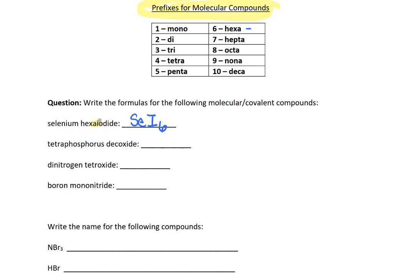Let's look at tetraphosphorus dekoxide. Tetra is the prefix for 4, and dek is the prefix for 10. So the symbol for phosphorus is P. We are being told that we have 4 of them. Oxide is O for oxygen, and we're being told that we have 10 of them.